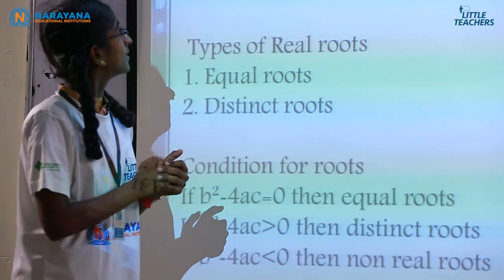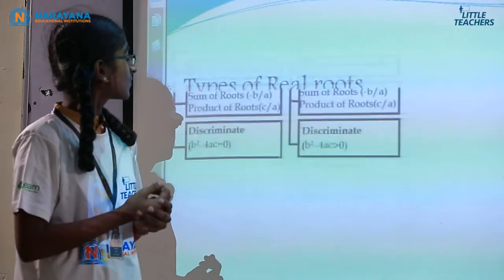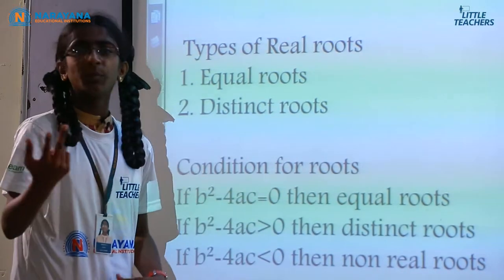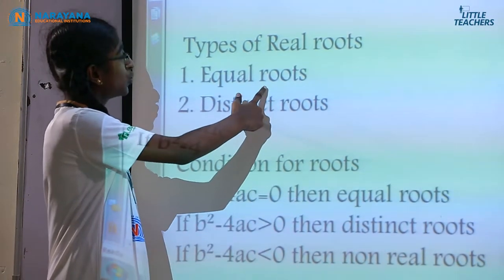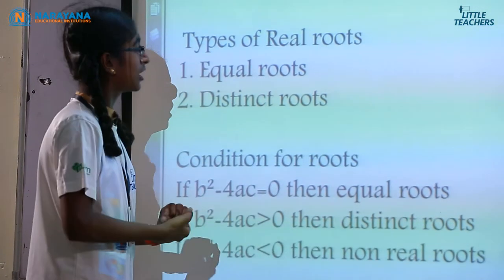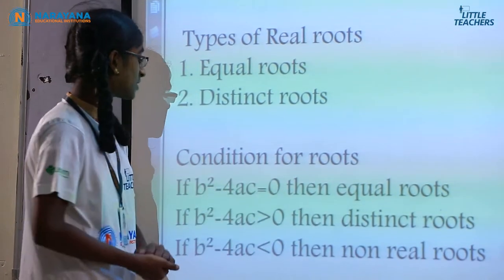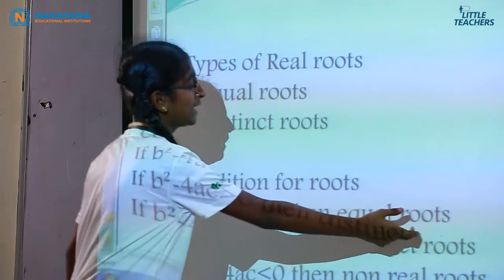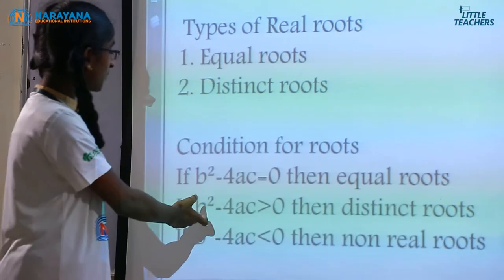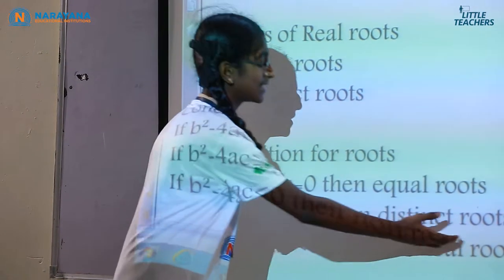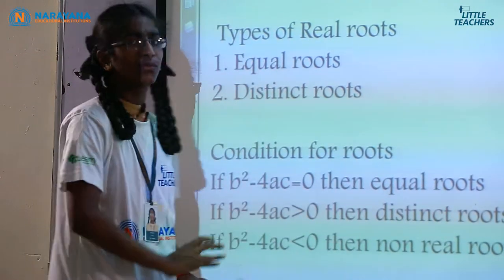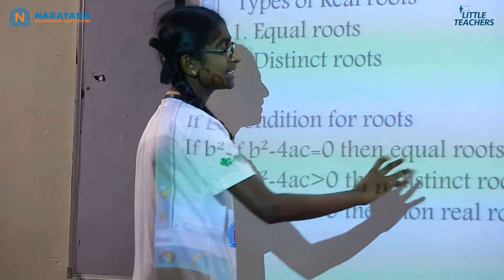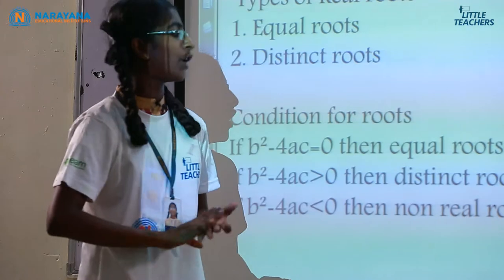Conditions for the roots: if b² − 4ac = 0, then the roots are real and equal. If b² − 4ac > 0, the roots are real and distinct. If b² − 4ac < 0, the roots are non-real. When the first two conditions are combined, they form real roots.